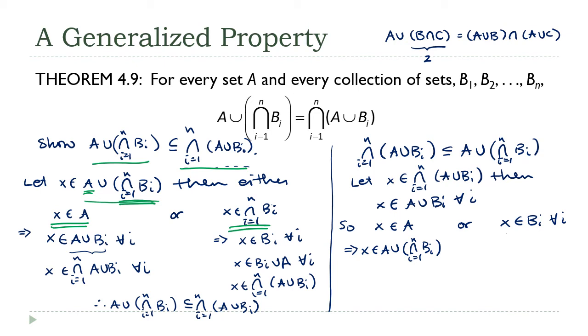Now over here, if X is in every one of these B sub I, then X must be in their intersection. And if X is in that intersection, then X must be in the union of that intersection and any other set, in particular the set A. Therefore, we're done. We've shown all the possibilities here.